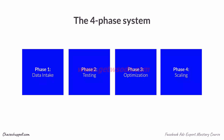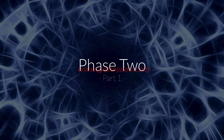Here is the four-phase system. Phase 1 is data intake, phase 2 is testing, phase 3 is optimization, and phase 4 is scaling. We have to go through each of these phases before moving on to the next — otherwise you can throw off the entire system and damage your results. To get a better understanding of this four-phase system in greater detail, we're going to be covering phase 2. So now it's time to get started on phase 2.